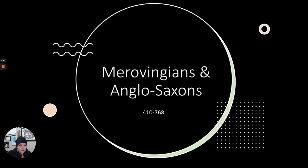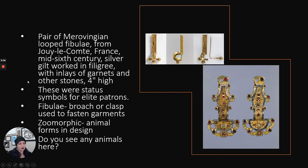You should have watched the introduction video already. The first two groups of people from the early medieval European history of art and architecture that we're going to look at are the Merovingians and the Anglo-Saxons, who kind of become the Vikings. There's a lot of people that sort of intermix and become the Vikings, but anyway, let's look at some stuff.